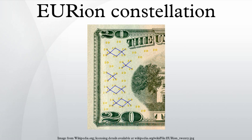The Orion Constellation first described by Kuhn consists of a pattern of five small yellow, green, or orange circles, which is repeated across areas of the banknote at different orientations. The mere presence of five of these circles on a page is sufficient for some color photocopiers to refuse processing.